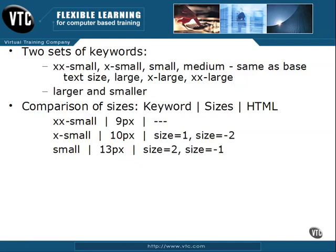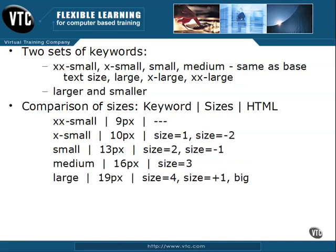Then we have small, which is about 13 pixels, and it's size 2 or size negative 1 in HTML. Then we have medium, which is going to be 16 pixels, and size 3 for HTML. Notice there's no relative size for HTML there, because that's the default. Then we have large, which is about 19 pixels, or size 4 in HTML, or size plus 1. There's also another keyword in HTML — big — which is about the same.